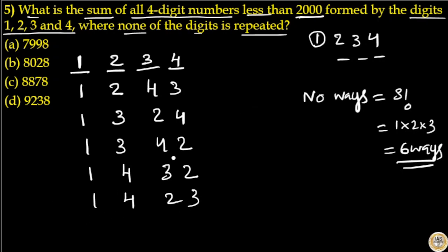Now the sum. Here 4 repeated 2 times, 3 repeated 2 times, 2 repeated 2 times, that is 18. So 8 comes here, 1 carry over.